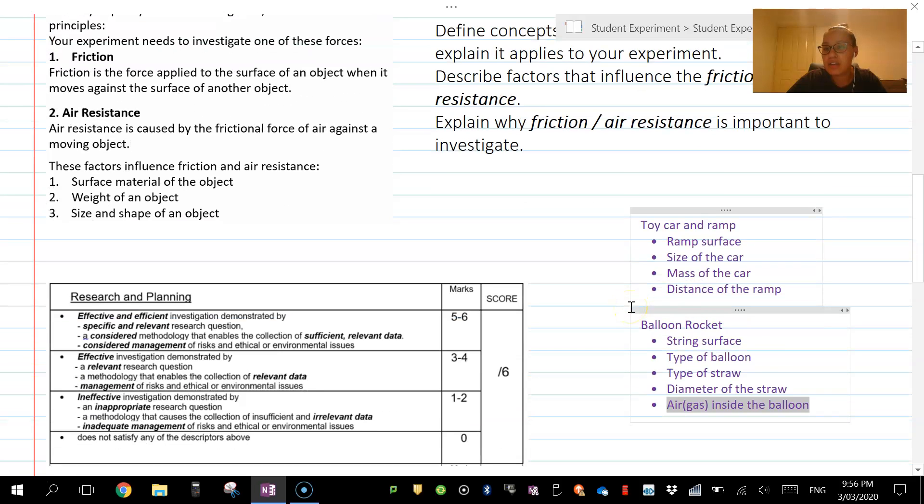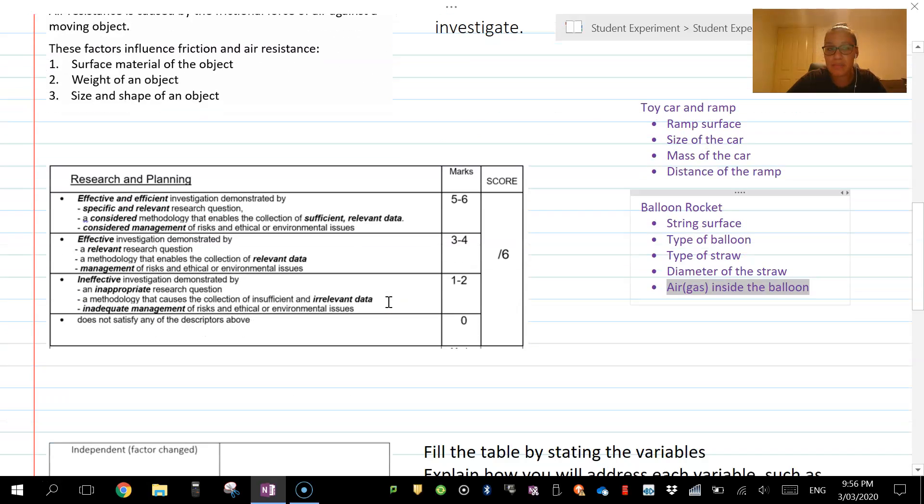What we need to do then is find one that is specific and relevant. That's what we're looking for in terms of research and planning. That would not be appropriate—even though it's a relevant research question, it's not specific, or actually it would probably be more considered inappropriate because it's not linking back to our understanding of friction and air resistance.